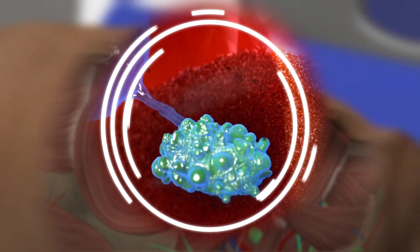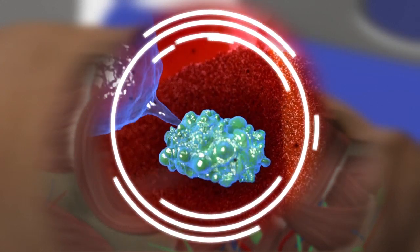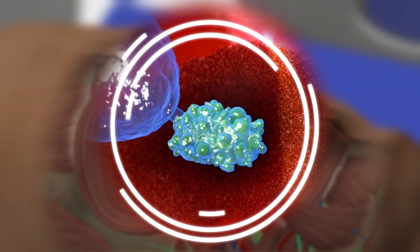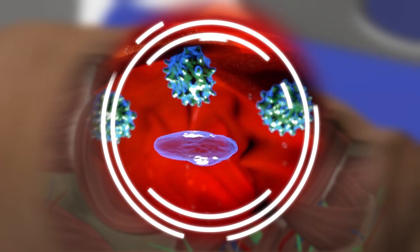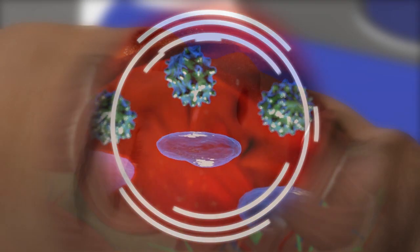Adaptive immunity, threats from specific agents that have entered the body are processed and antibodies created to destroy them. These threats are remembered, recognised and acted against the next time they appear.